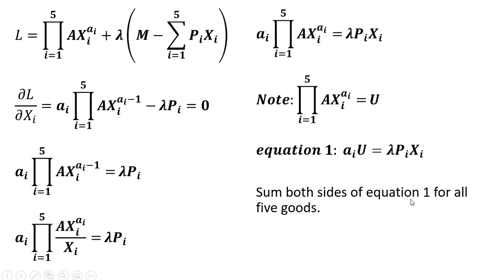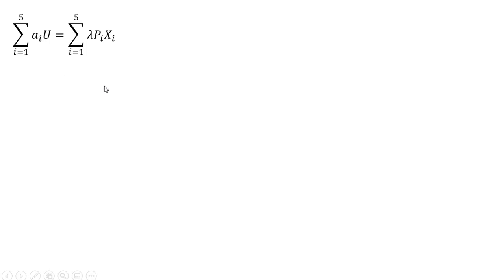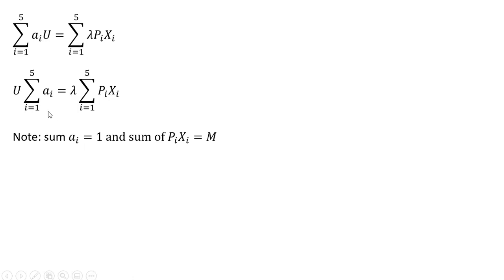Next, we sum both sides of equation one for all five goods — both the left-hand side and the right-hand side. We can factor U and lambda out in front since they are not subscripted by i. Note that the sum of the exponents equals one, and if we sum up the expenditures on each good — P_i times x_i — we just get money income m.